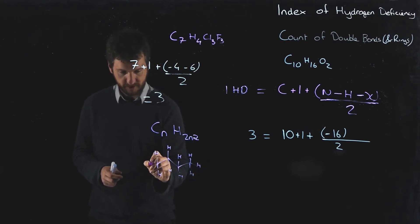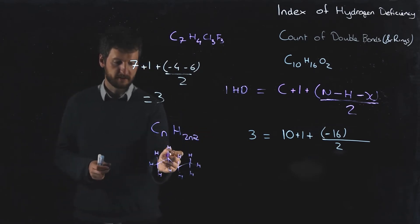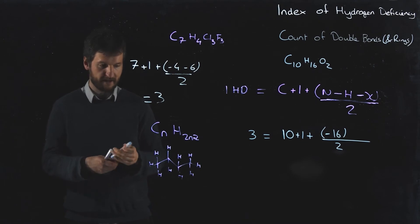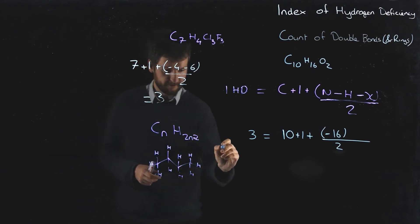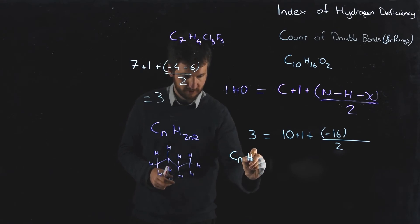What we found is if we put in a double bond, well wherever the double bond is, you're going to have to lose hydrogen from either side in order to accommodate the new bond. So if we have an alkene, we would have CnH2n.